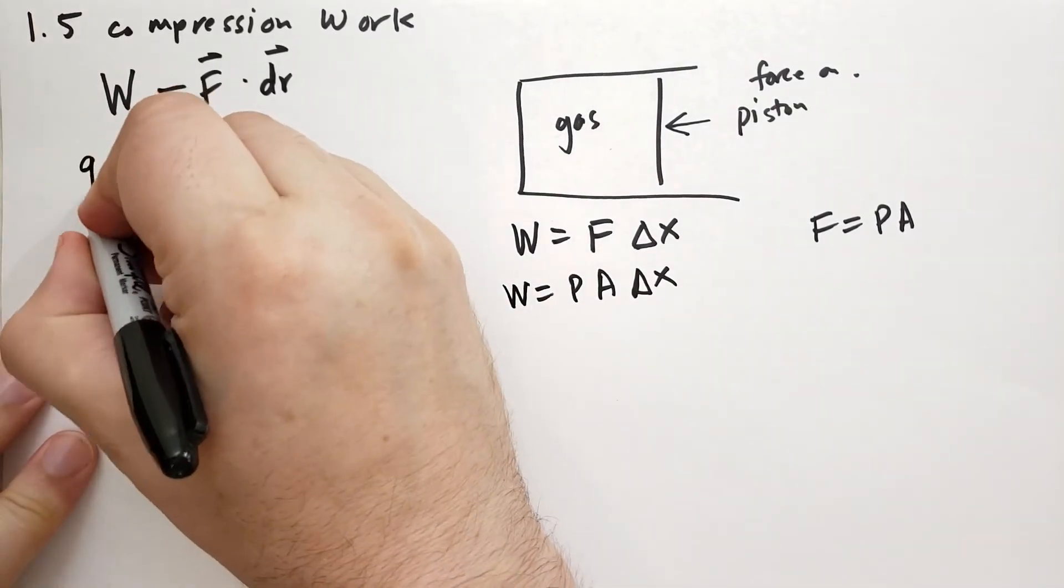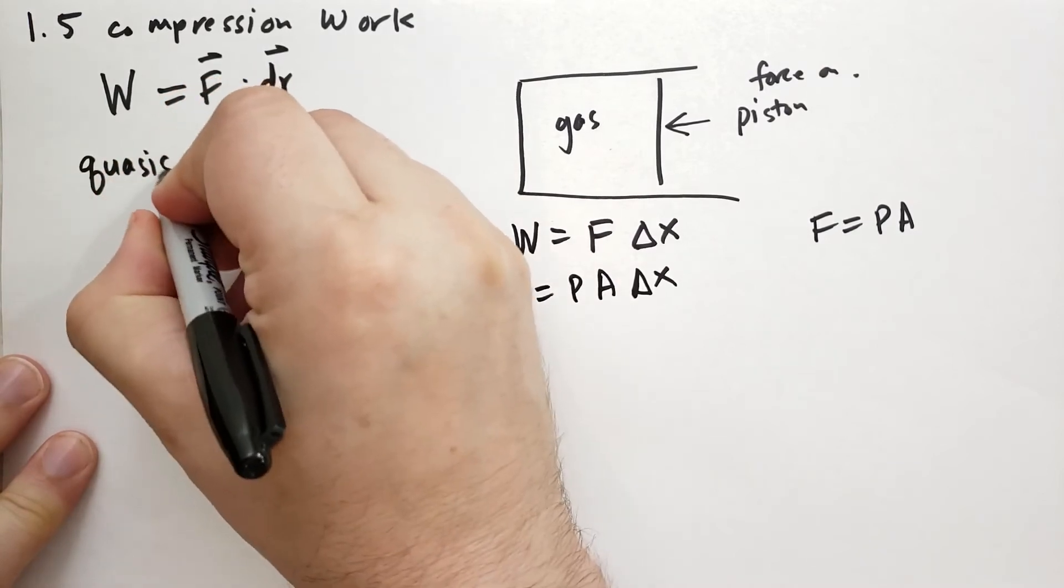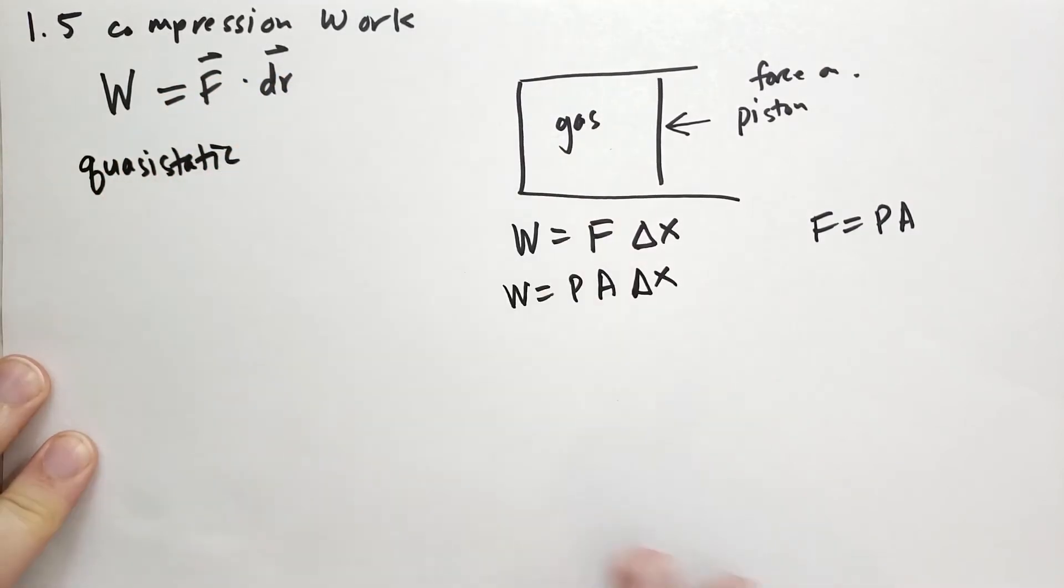At this point, he introduces a new term, it's called quasi-static. And what quasi-static means is that we're applying the changes relatively slowly to the gas. The exact measure of how slow we need to be is actually, in experimentation, not really that important. As long as you're going slower than the speed of sound in the gas, you should be fine.